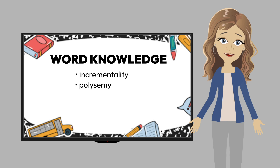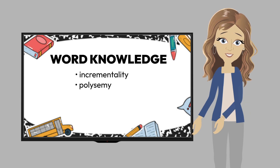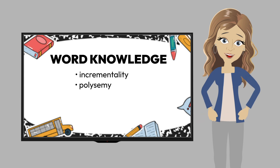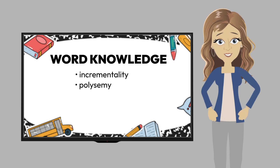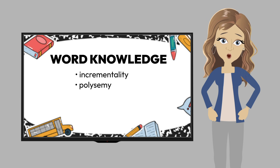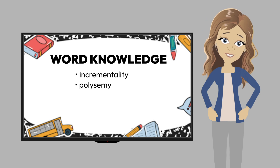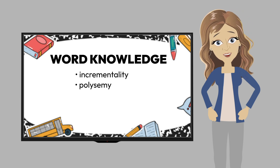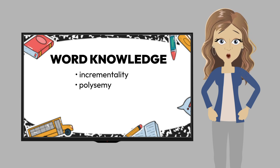Polysemy means that words often have multiple meanings, and these meanings are not static but shift according to context. Remember the BAT example from module 2, where the reader conjured up three definitions for BAT but discarded two of them in light of the context in which it was being used.